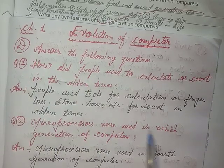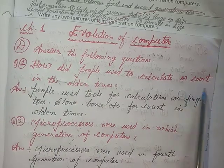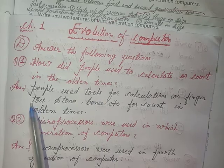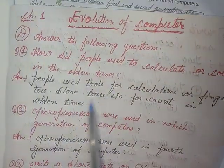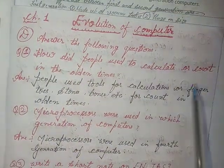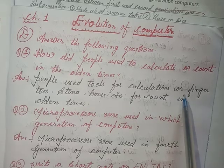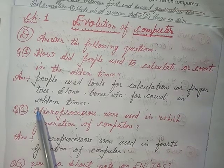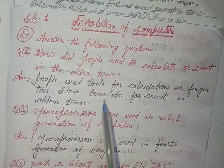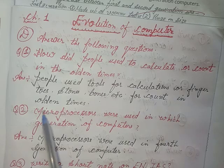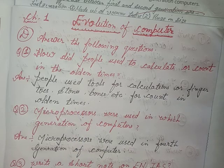First, how did people used to calculate or count in the olden times? Answer: people used tools for calculation — fingers, teeth, stones, bones, etc. for counting in olden times.